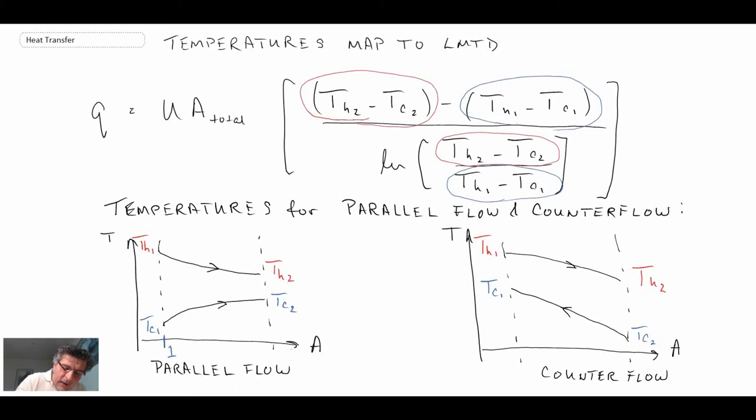Again here that is location one, location two, and then the temperatures would either be hot or cold and they would correspond. And so that's how you can get the temperatures that you would use within the LMTD expression as shown above.